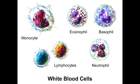In what condition would you see a hypersegmented nucleus in neutrophils? You would see hypersegmented nuclei in conditions such as vitamin B12 and folate deficiency. Neutrophils are said to have hypersegmented nuclei if there are 5 or more lobes.